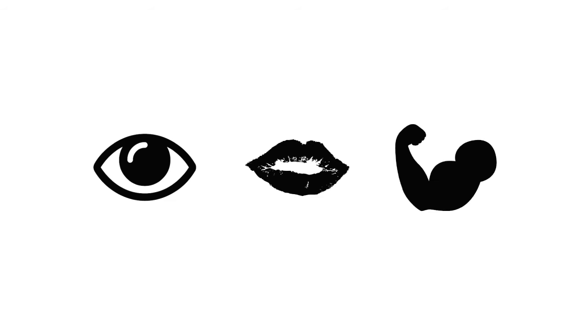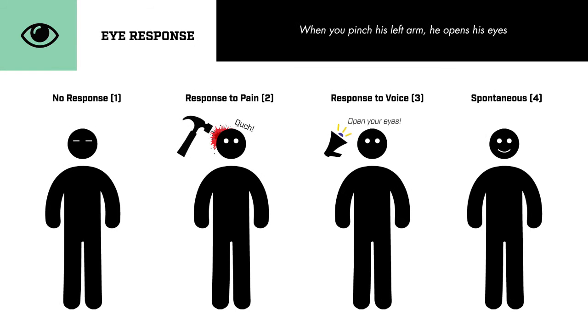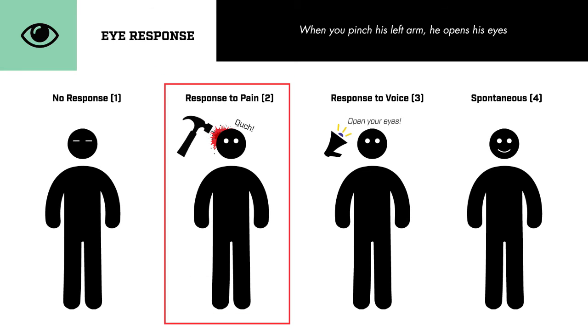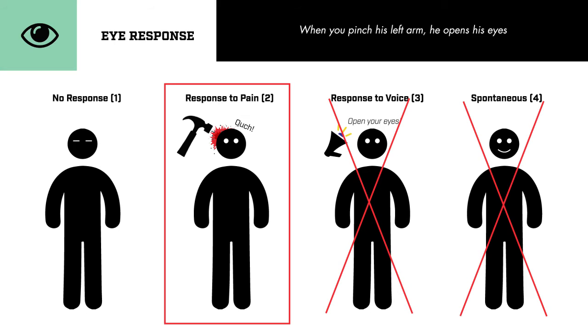Remember that the Glasgow Coma Scale is determined by three categories: the patient's eye response, verbal response, and motor response. In regards to this patient's eye response, the patient responds only to painful stimuli. He is not looking around spontaneously, and he doesn't open his eyes when you call out his name. This would give him two points.